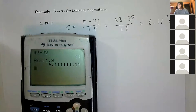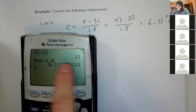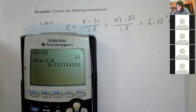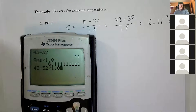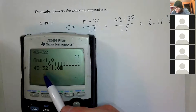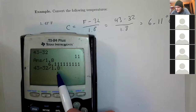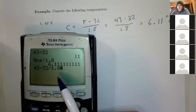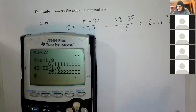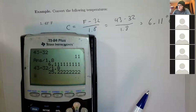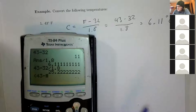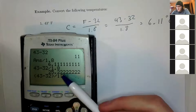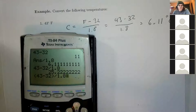Make sure you're computing this properly. A common mistake is to enter 43 − 32 ÷ 1.8 directly, which only divides the 32 by 1.8 and leaves the 43 untouched — giving the wrong answer. If you want to do it in one step, use parentheses: (43 − 32) / 1.8. The parentheses ensure both terms get divided by 1.8.